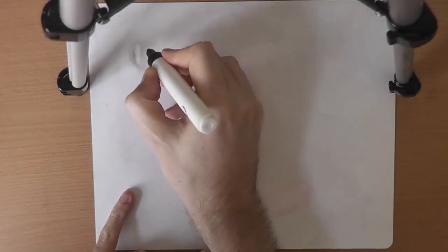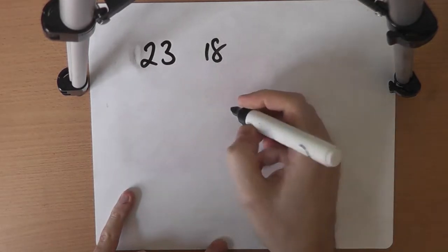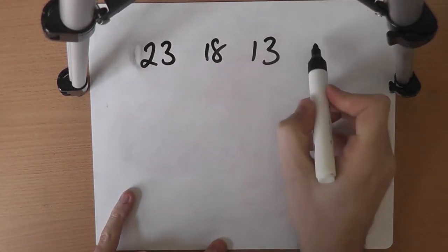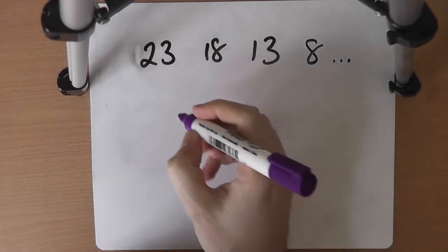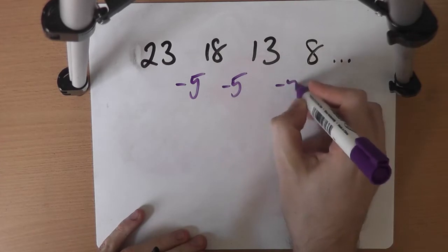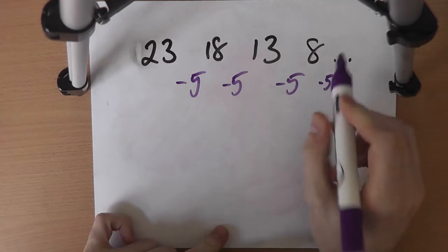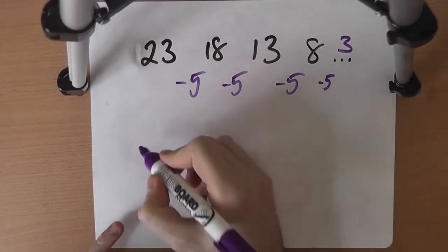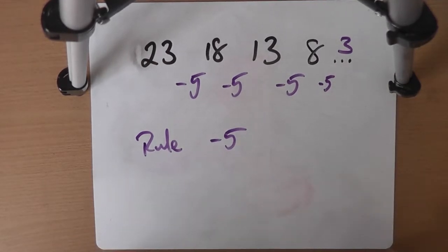Something like 23, 18, 13, 8 — we could work out the next number in that sequence. That is a sequence, a different kind of sequence. This time the rule is that each time we're taking away 5. It's a sequence decreasing — it's going down. But the next one would be 8 take away 5, which would leave us with 3. And the rule for this sequence would be take away 5. Still a set pattern that happens every single time.